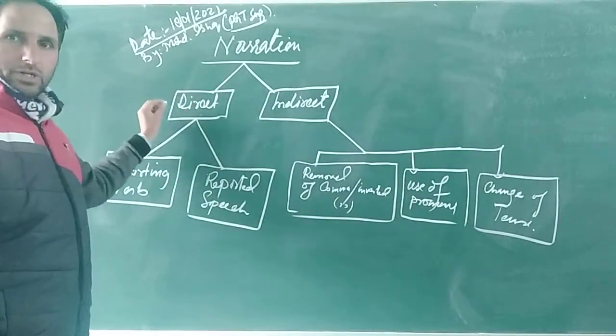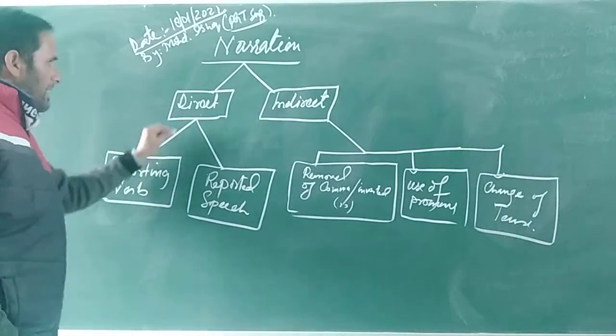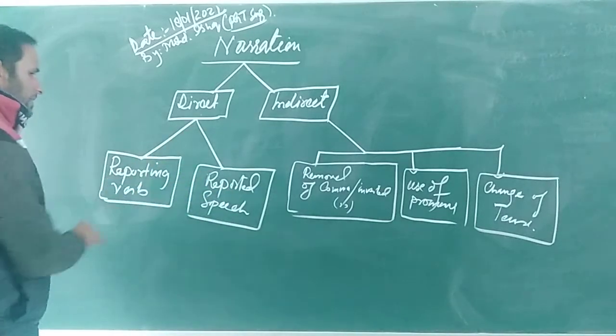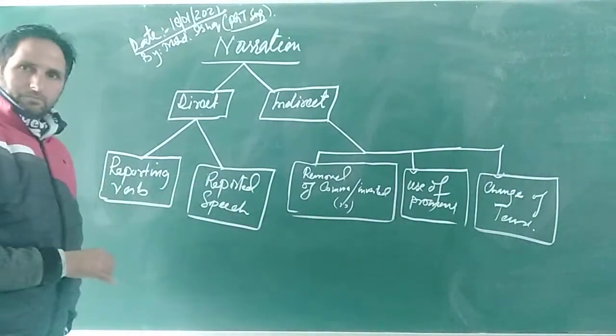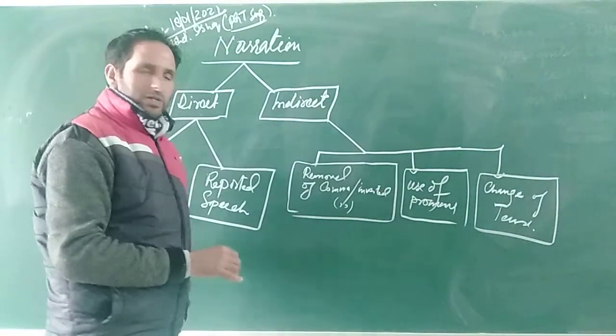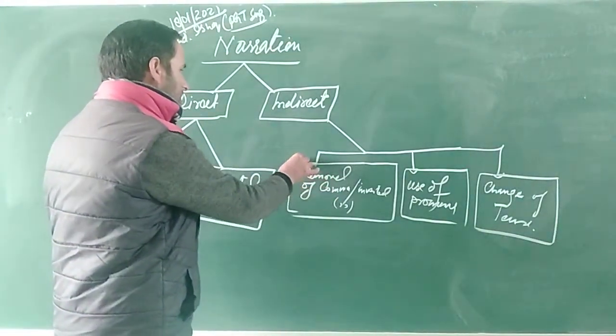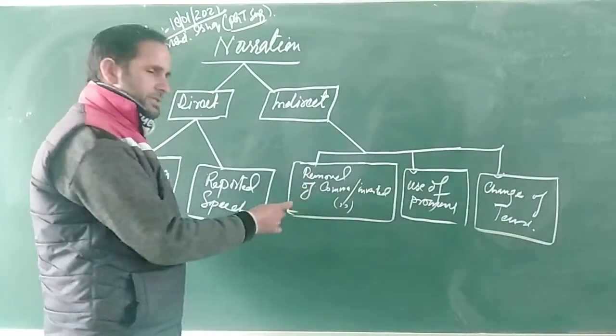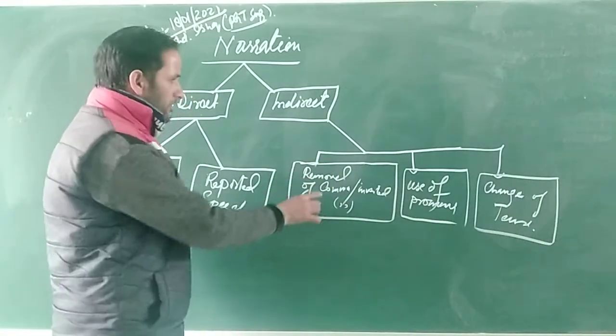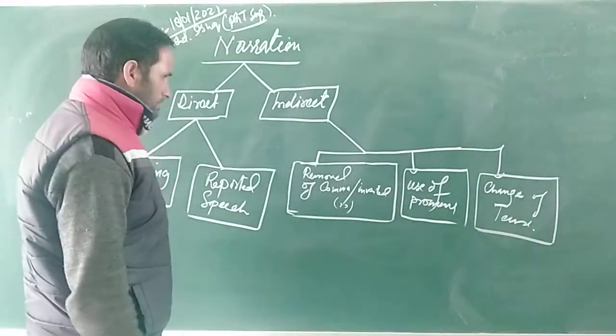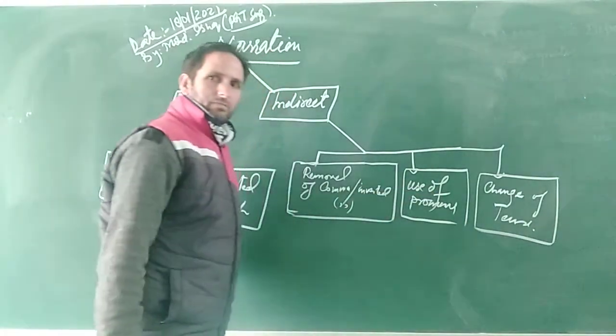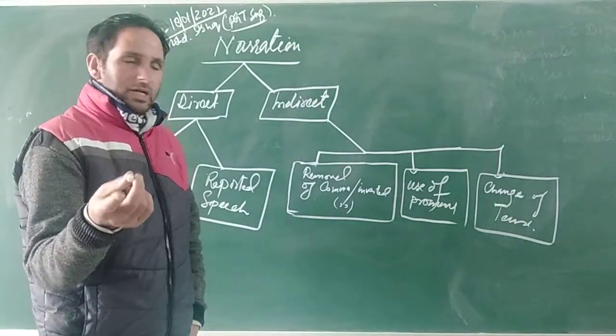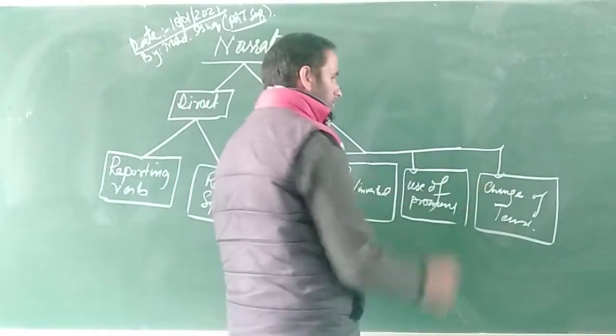As far as narration is concerned we have two parts of it. See here, I have given here the diagram. One is reporting verb and next is reported speech. And so far as indirect is concerned we have various things that we need to remember: various alternatives, changes and requirements. For instance, here in the first box I have written removal of comma and inverted commas. Next is use of pronouns.